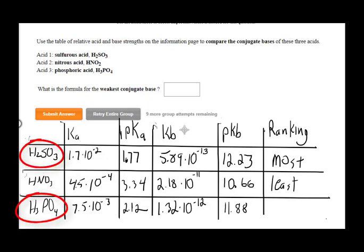One final note, H2SO3 and H3PO4 are polyprotic acids. Polyprotic acids have at least two Ka values.